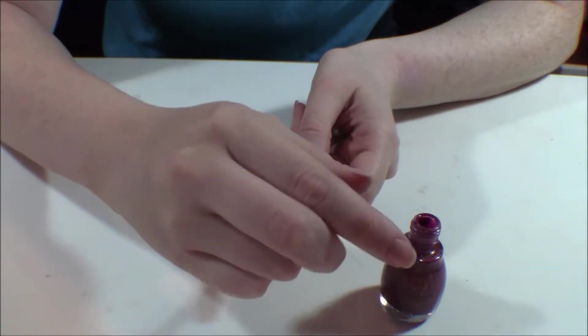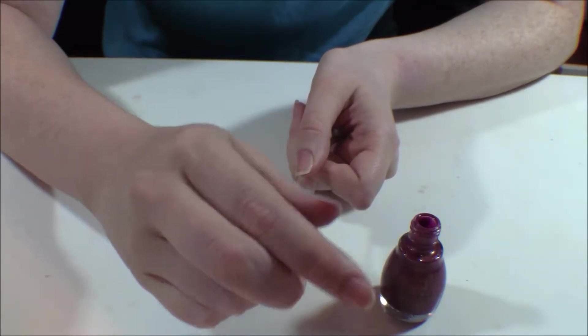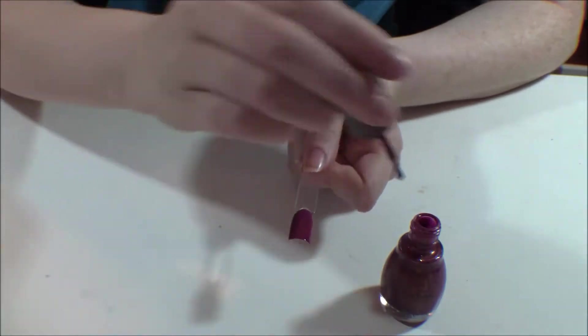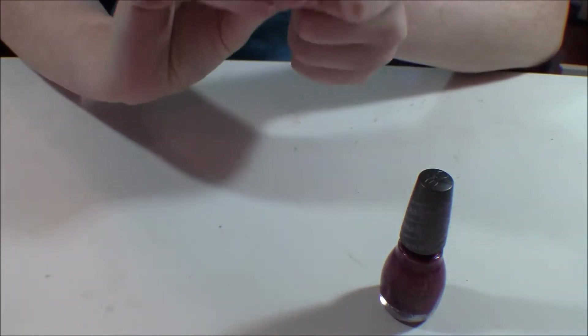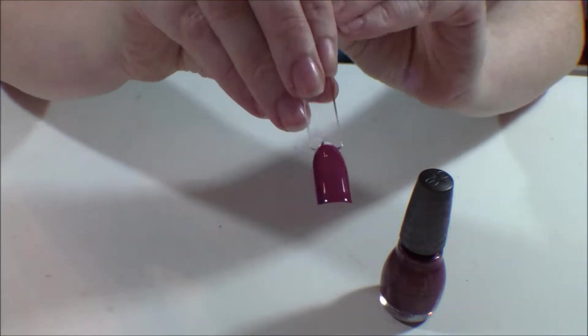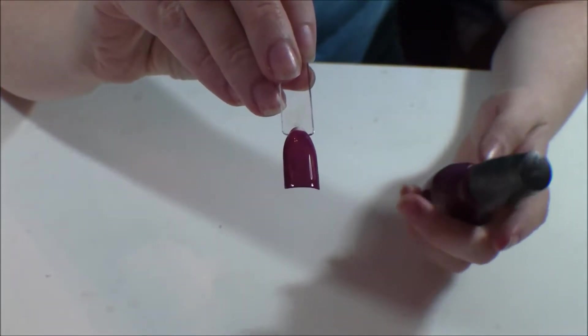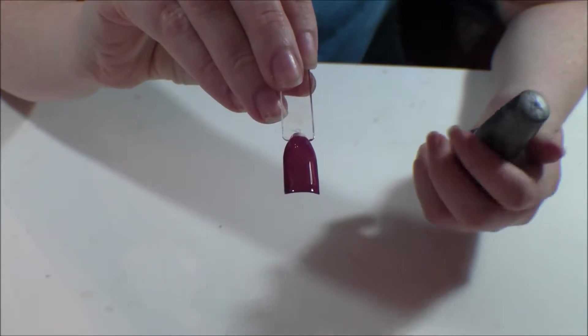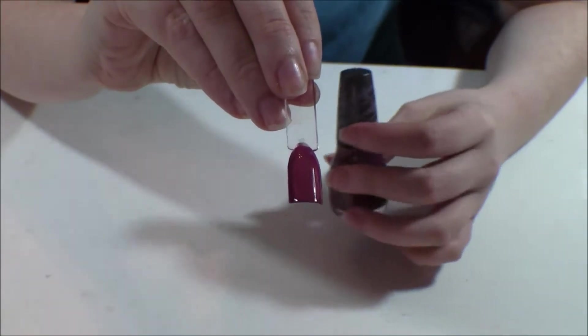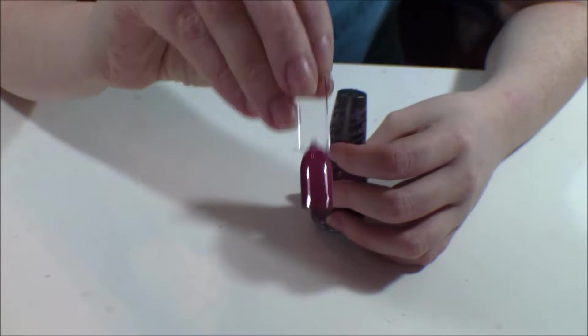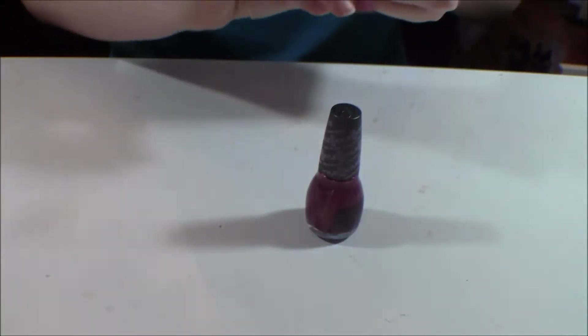So this collection does dry down to like a sort of matte finish. This one is kind of like a not quite raspberry color, it's kind of hard to describe. It's sort of like a muted raspberry with a gold shimmer. It is glossy right now but that will dry down matte. You'll see in the second coat. So that is my first color.